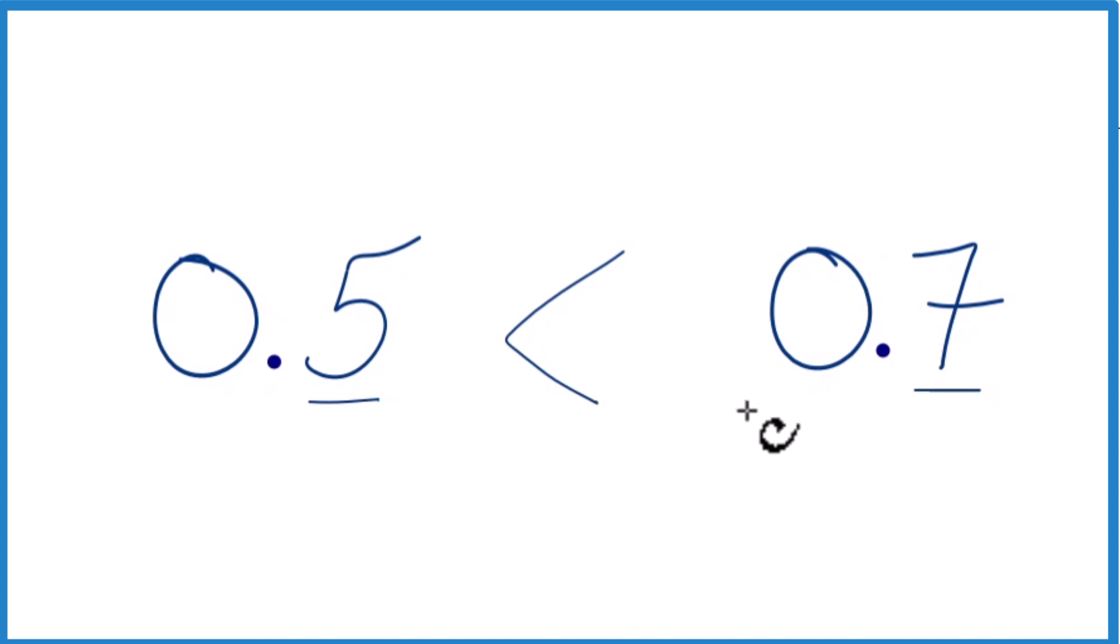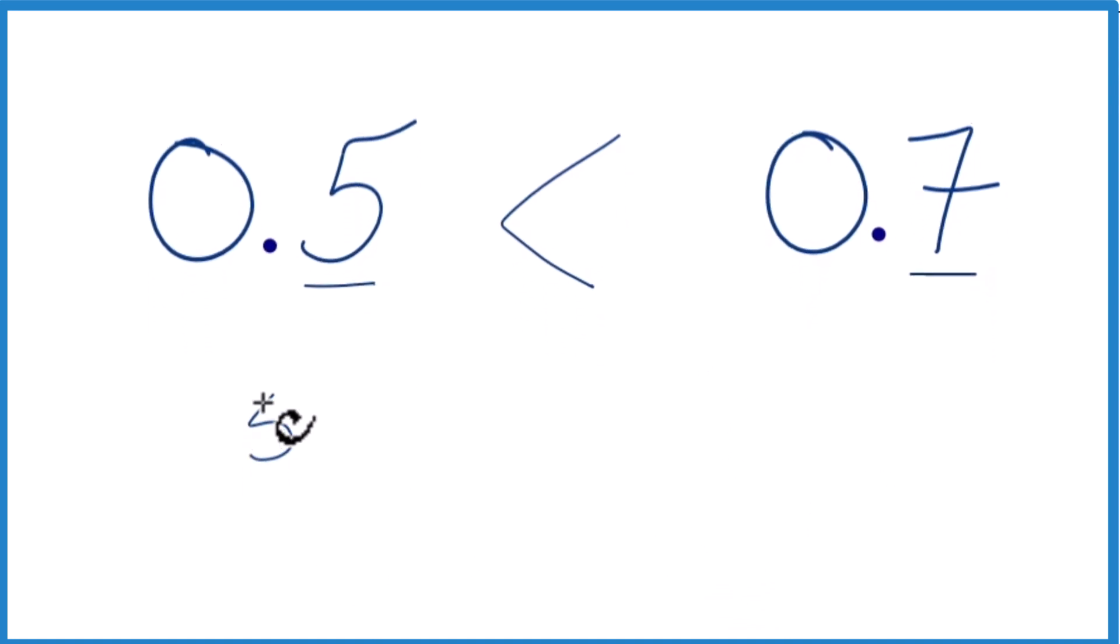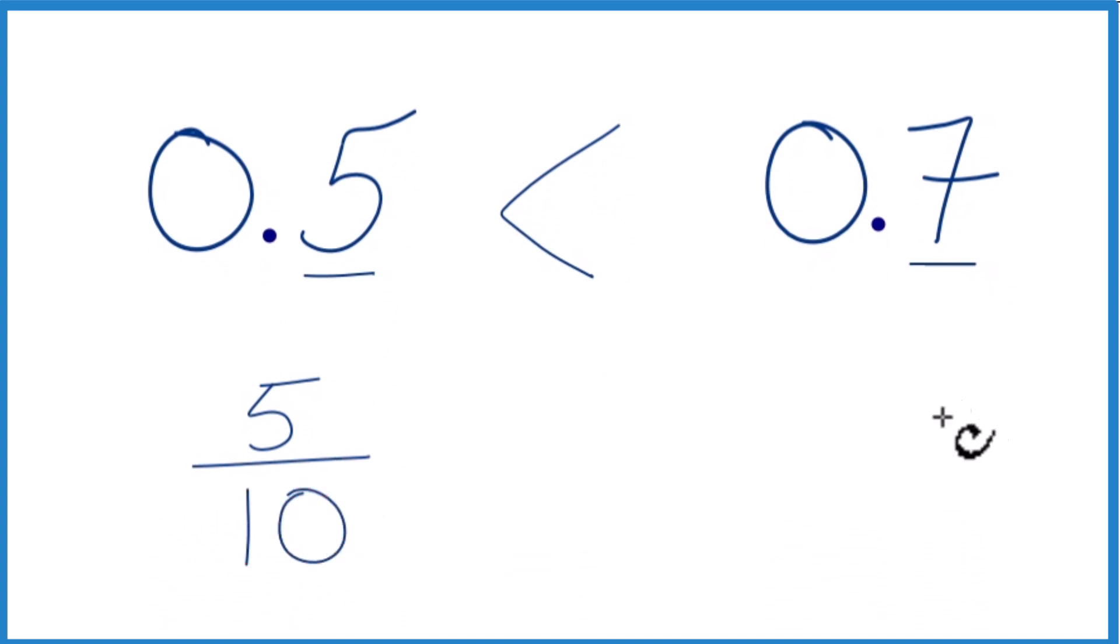That's kind of it. Sometimes your teachers will want you to put them in fractions and then compare the fractions. So 0.5, we could just call that 5 over 10. 0.7, we could call that 7 over 10.